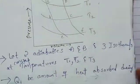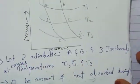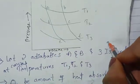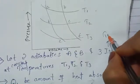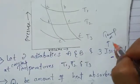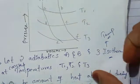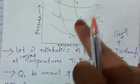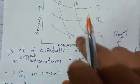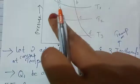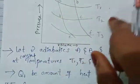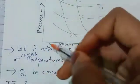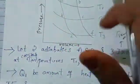We have 3 isothermal processes at constant temperatures. The isothermal process has temperature constant. So here we consider 3 isothermals: 1, 2, 3. This is at constant temperatures T1, T2, and T3 — these are the 3 isothermals. Between them are adiabatics. So here we draw a graph with pressure with respect to volume.